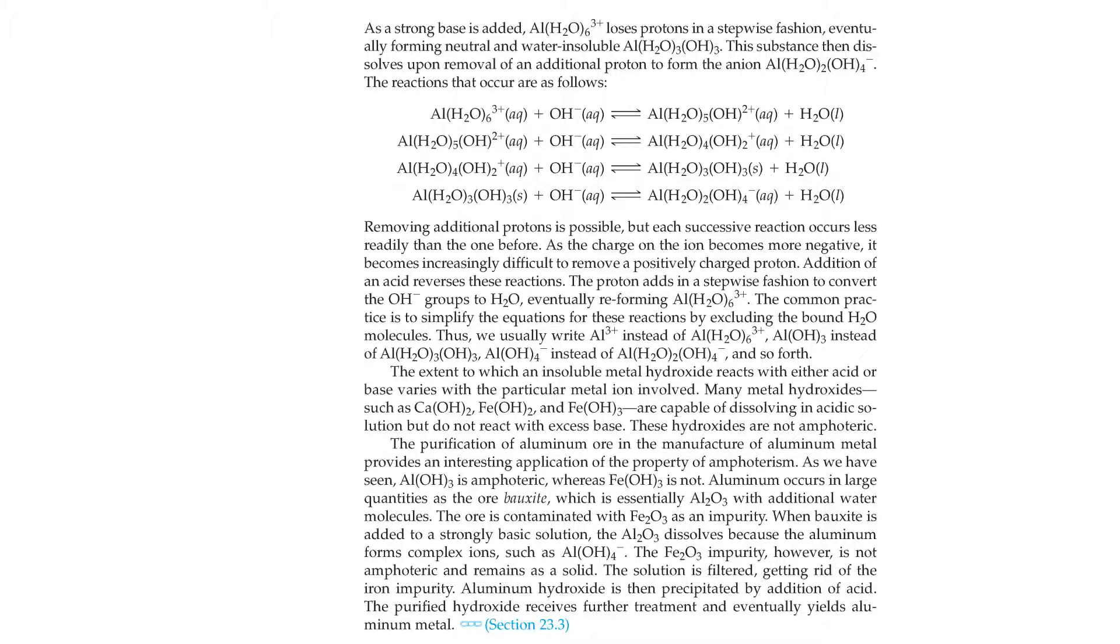The common practice is to simplify the equations of these reactions by excluding the bounded water molecules. Thus, we usually write Al³⁺ instead of the complex ion Al(H2O)6³⁺, Al(OH)3 instead, and Al(OH)4⁻ instead, and so forth. The extent to which the insoluble metal hydroxide reacts with either acid or base varies with the particular metal ion involved. Many metal hydroxides, such as Ca(OH)2, Fe(OH)2, and Fe(OH)3, are capable of dissolving in acidic solution, but do not react with excess base. These hydroxides are not amphoteric.